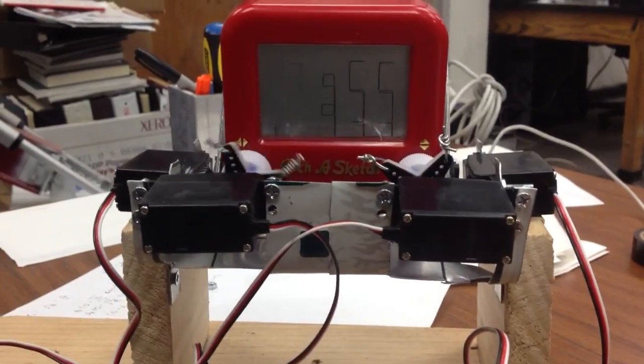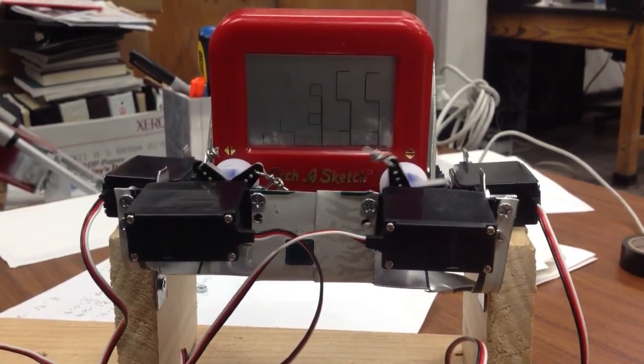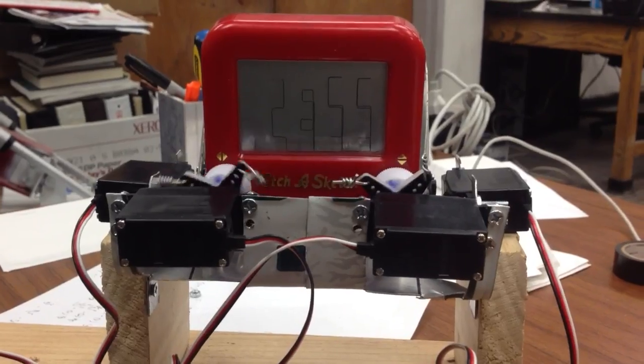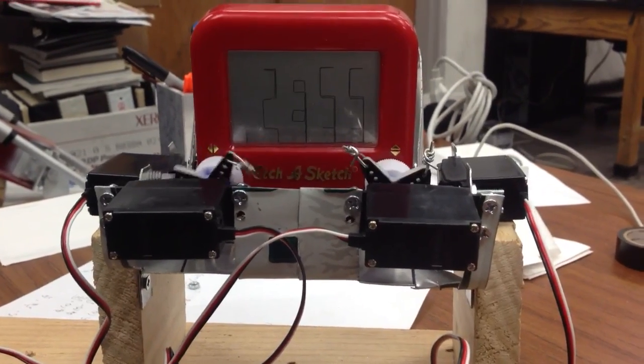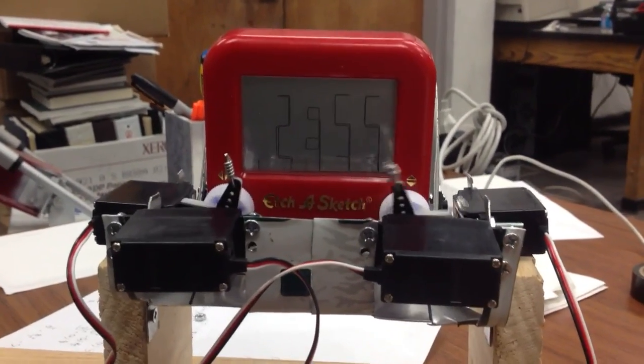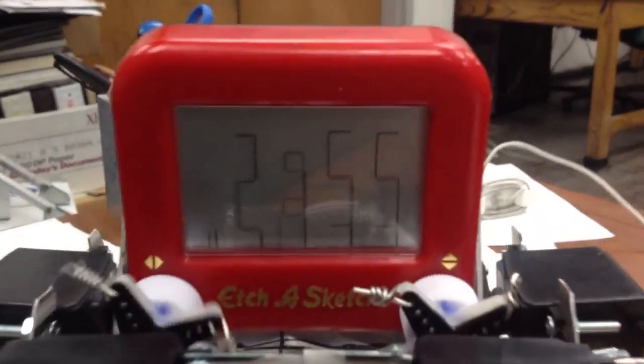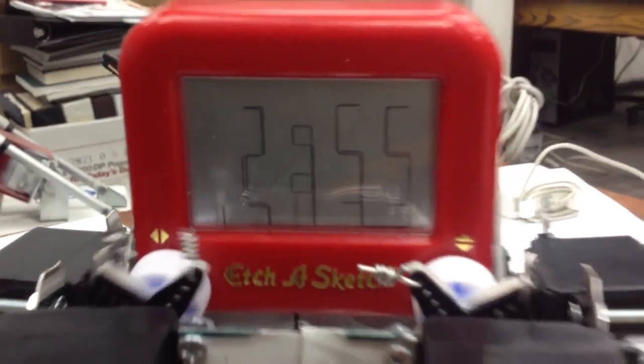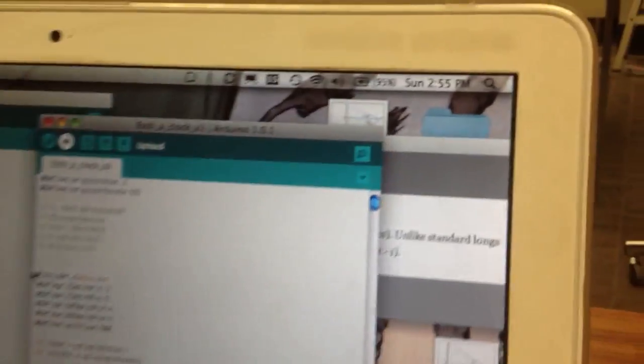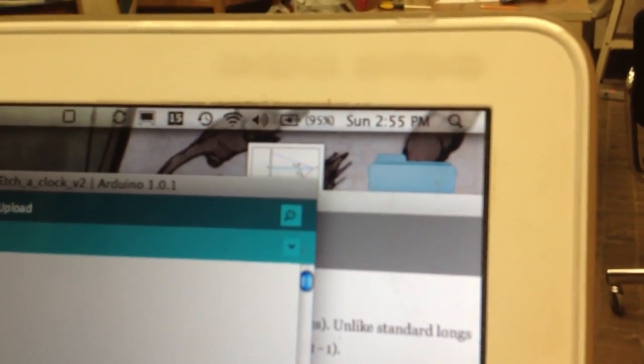So anyway, as you can see, it's drawing the time right now, and as you can see, it is 2:55 is what the time that the Etch-a-Sketch says, and as you can see over here, it's currently 2:55.